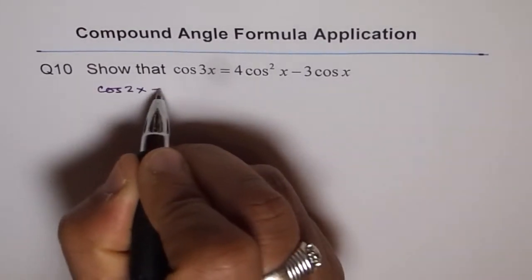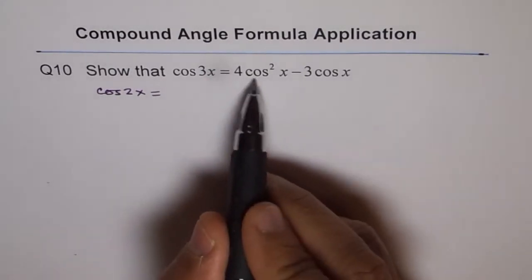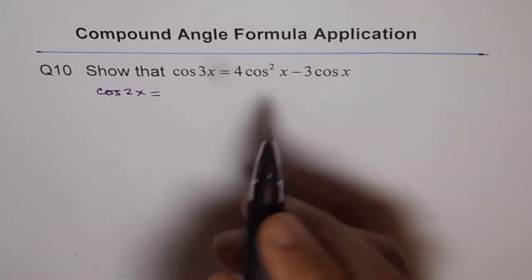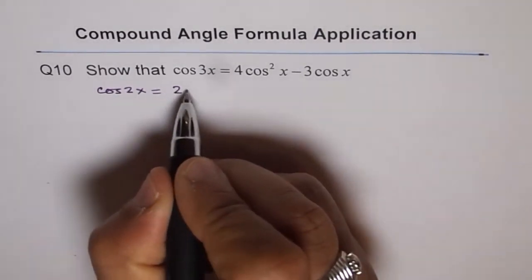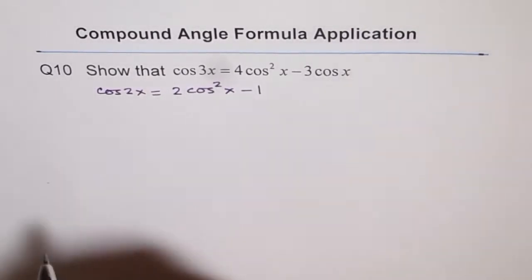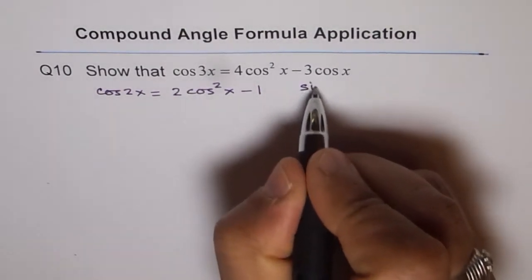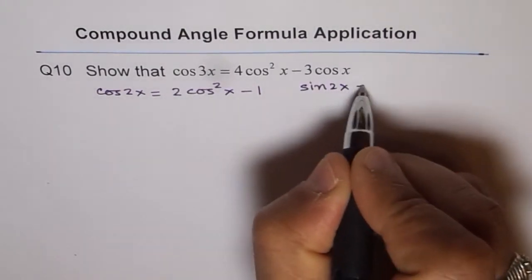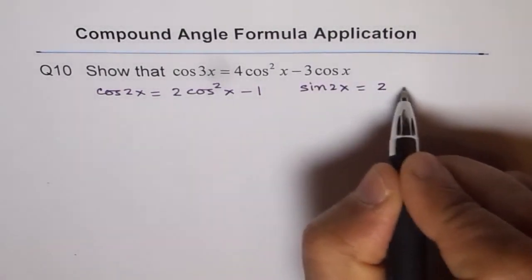Cos 2x has actually 3 formulas, and since we want results in cos, we will use the one which has 2 cos squared x minus 1. And sine 2x, if you remember, is 2 sine x cos x.